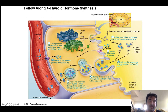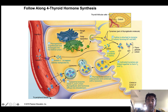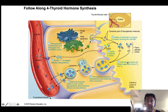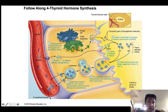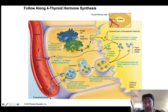When we think about thyroid hormone synthesis, follicular cells surround a substance called colloid. Thyroglobulin is synthesized in the rough endoplasmic reticulum, sent to the Golgi apparatus, and ultimately shipped to the colloid. Thyroglobulin is critically important in the synthesis of thyroid hormone. Another key component is iodide, which always exists in an ionic form and is transported into the cells via an iodide transporter.